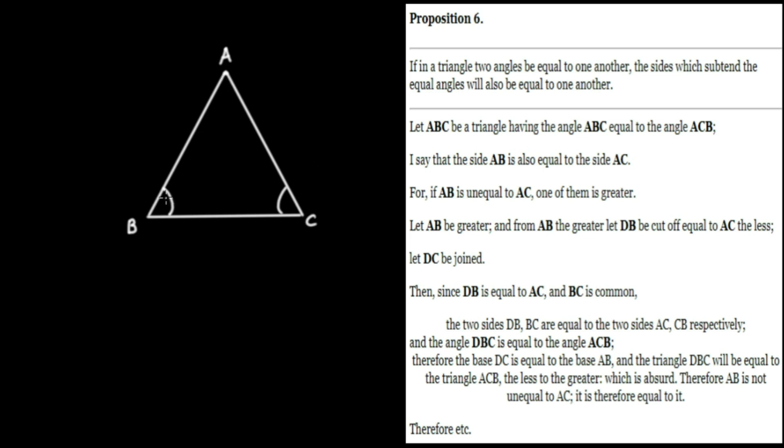And he says, let AB be the greater side. If that's the case, from AB the greater, let DB be cut off equal to AC the less. So remember, we're supposing that AC is going to be less than AB. So if that's the case, what we're going to do is cut off from AB, D to B, which is going to be equal to AC. And then let DC be joined.